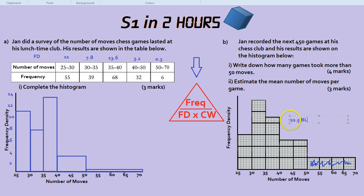But how many people does that represent? Well, it tells us in the question that represents 450 games, chess games. So that's the frequency. 22.5 blocks is 450 games. Divide both sides by 22.5. So that would be one block. That divided by 22.5 would be 20. So one block is 20 games.